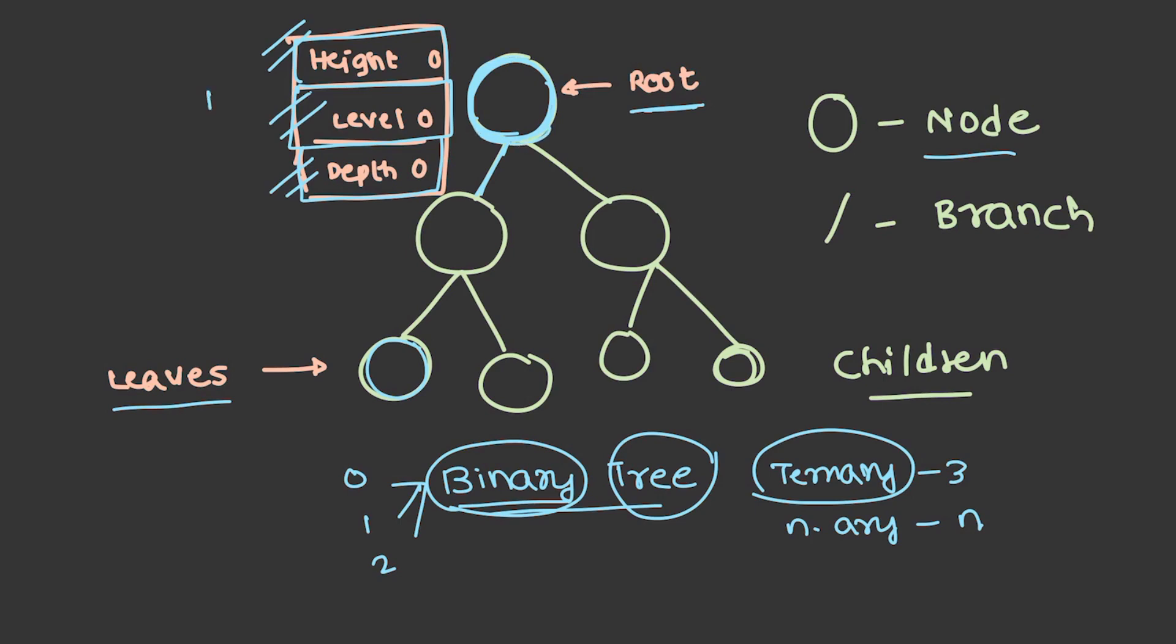Some people term it as zeroth level. Some people even call it as first level. Whatever it is, whenever a problem is given, it will be specified clearly whether the root is at zeroth level or first level. The same happens with height and depth as well. Except leaves and root, all the other nodes are called internal nodes.